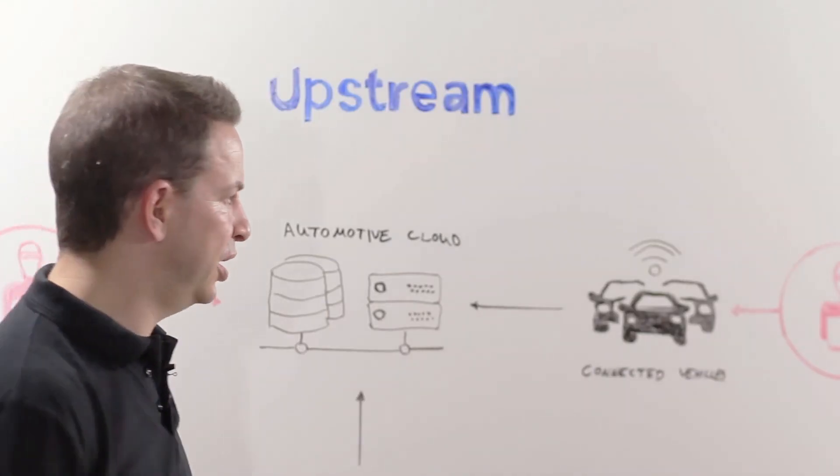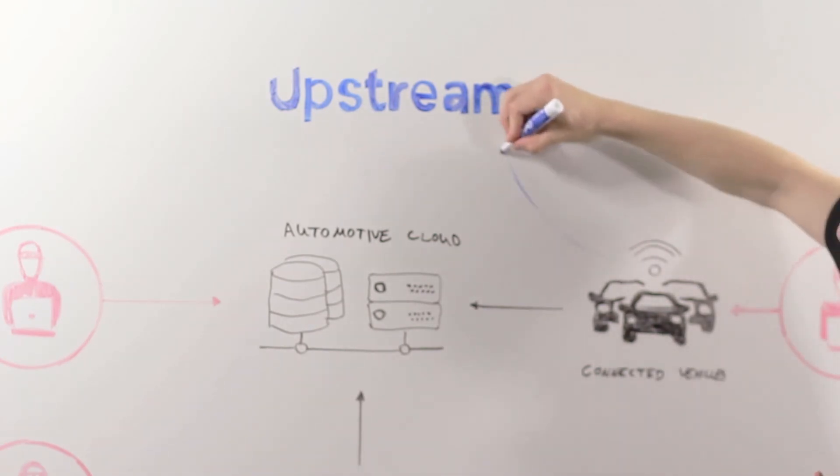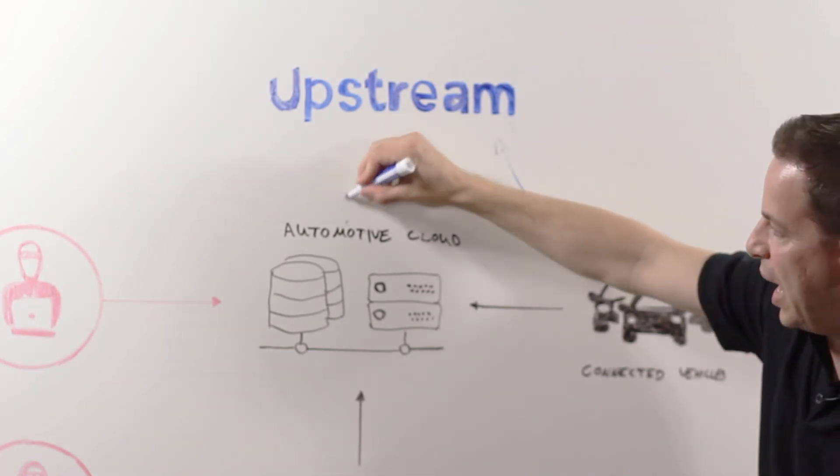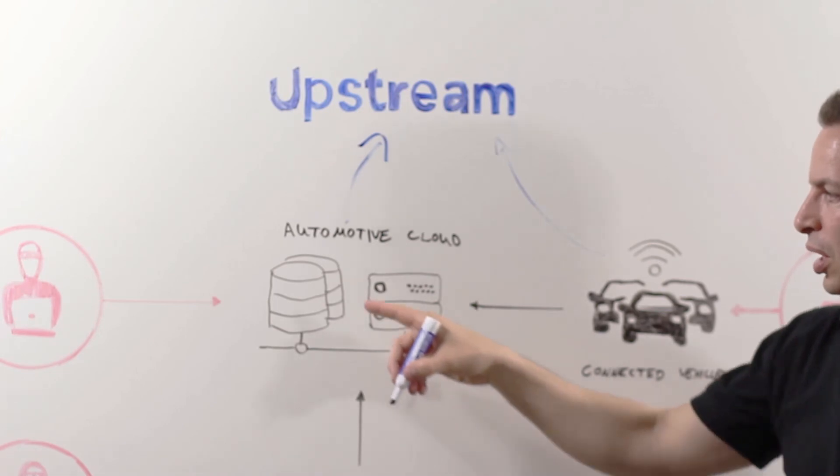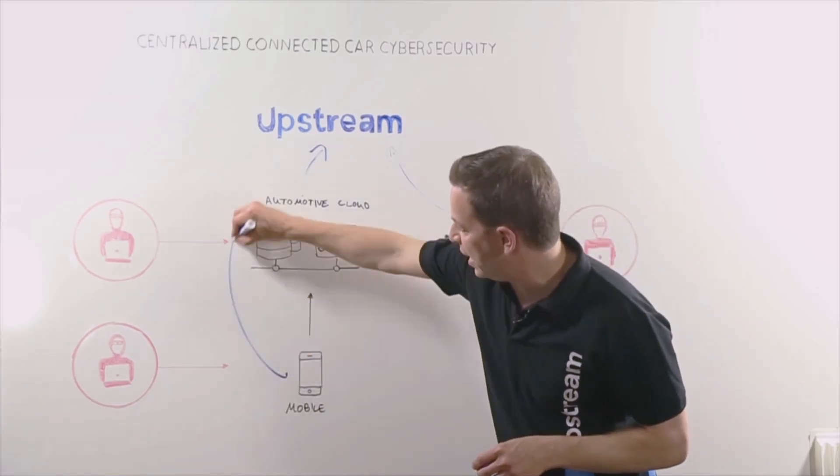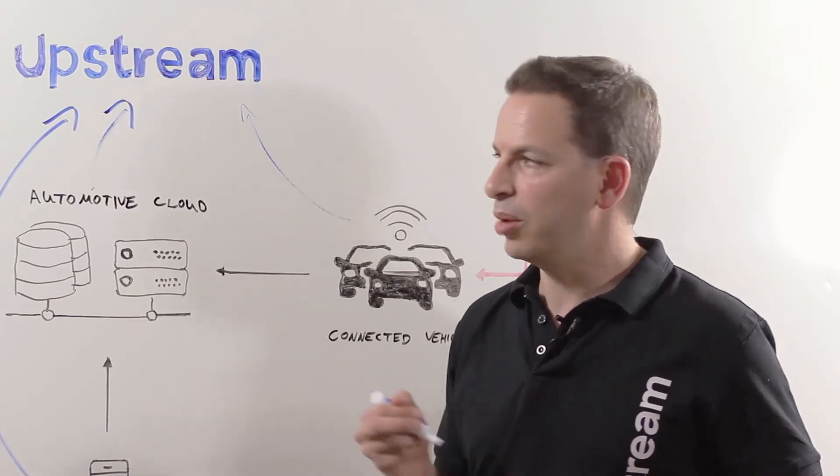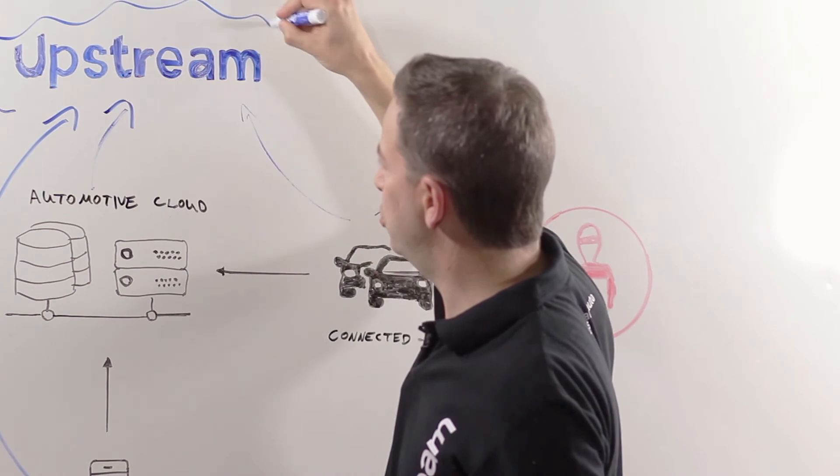Once installed, our platform collects data from all three of these sources. We start with data coming off the TCU from the connected vehicles. We add typically the telematic server that's hosted in the automotive cloud. And finally, we introduce the data coming off of the mobile application server. This is the point where the upstream cloud platform actually goes to work.